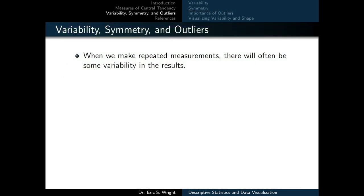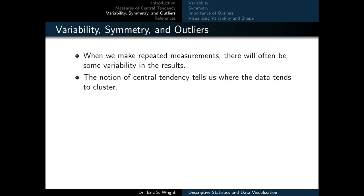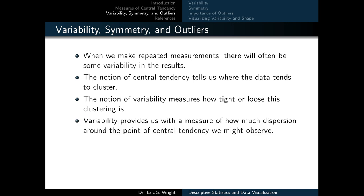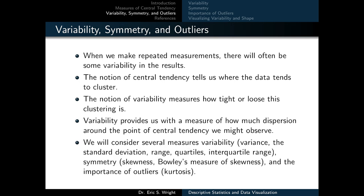Measures of central tendency such as the mean, median, and mode aren't the only descriptive statistics we might want to study. When we make repeated measurements to collect data, there will often be some variability in the results. Central tendency tells us where the data tends to cluster, but variability measures how tight or loose this clustering is — providing a measure of dispersion around the point of central tendency. We will consider several measures of variability: variance, standard deviation, range, quartiles, and interquartile range, as well as measures of symmetry including skewness and Bowley's measure of skewness, and finally kurtosis.